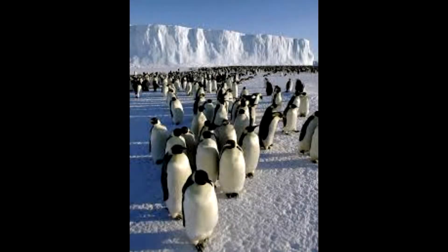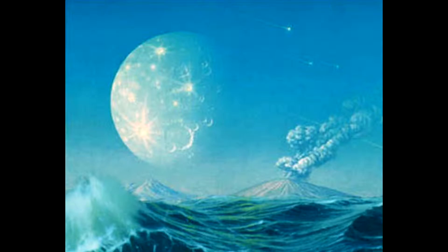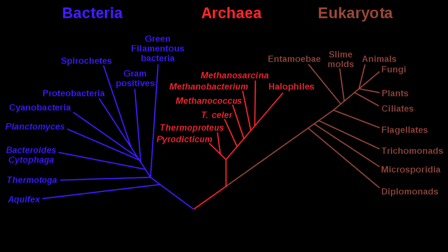Populations are never static. They have changed greatly from when the Earth was first formed. Evolution can occur in many different ways and produce an infinite amount of results. Chance mutations lead to variation, and natural selection sorts these variations between those who survive and those who die off.